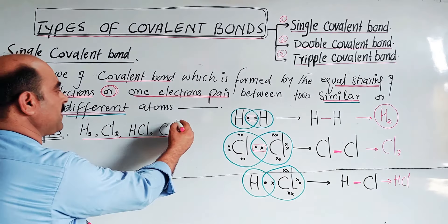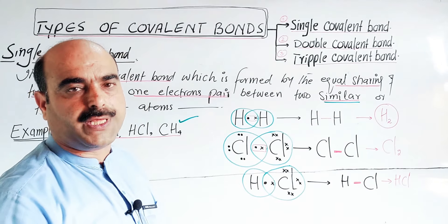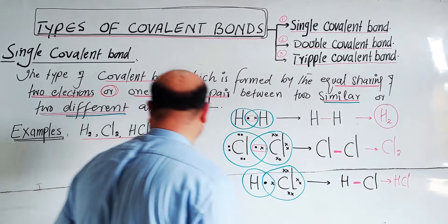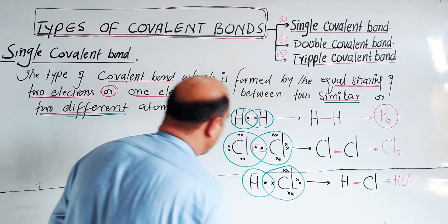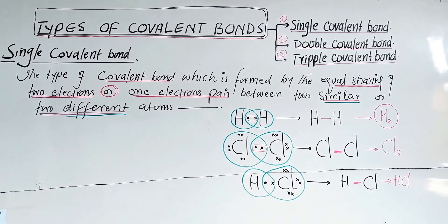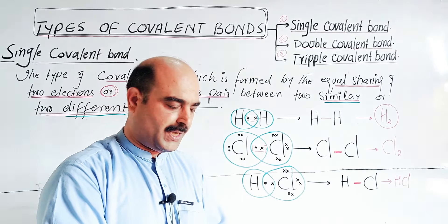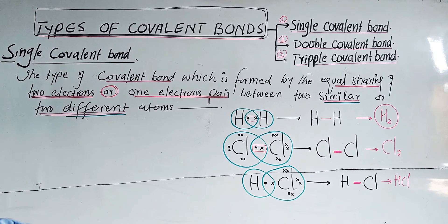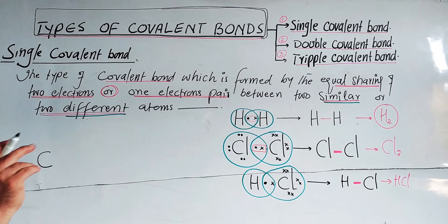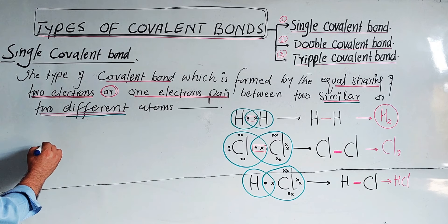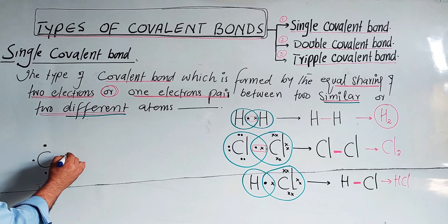The fourth example is the formation of methane. Methane contains carbon and hydrogen. Carbon has atomic number 6: first shell 2 electrons, second shell 4 electrons — so 4 valence electrons, needing 4 more to complete by 8. Each hydrogen has atomic number 1, with one electron in its first shell, needing one more to complete by 2.